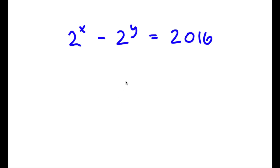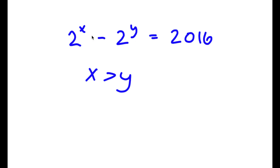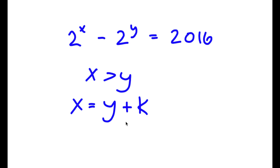In this problem, I have 2 to the power of x minus 2 to the power of y is equal to 2016. At first glance, I can already tell that x is greater than y, because if x were less than y, this would result in a negative number. But since it results in a positive number, x is greater than y. So we can say that x is equal to y plus some constant k.